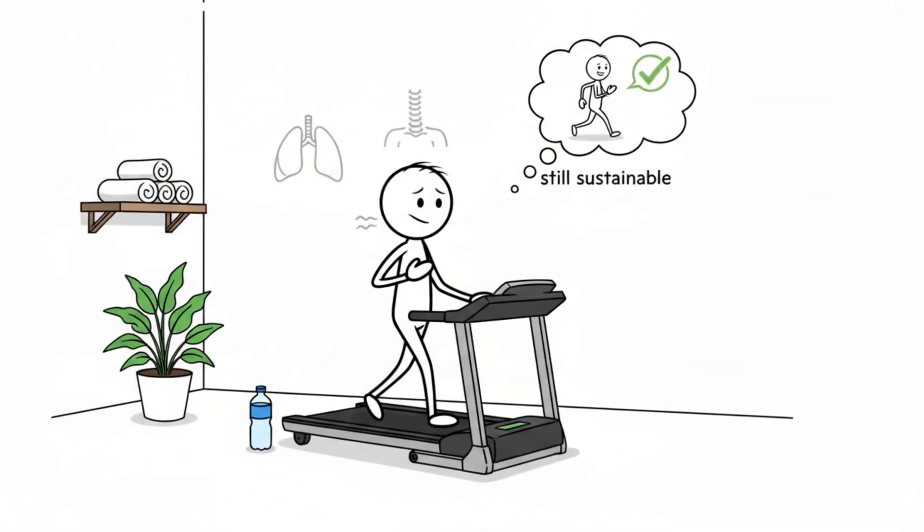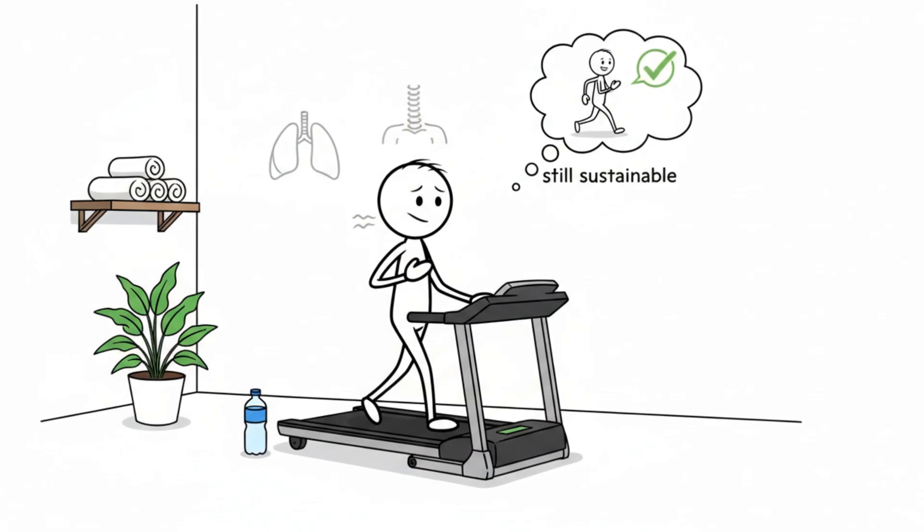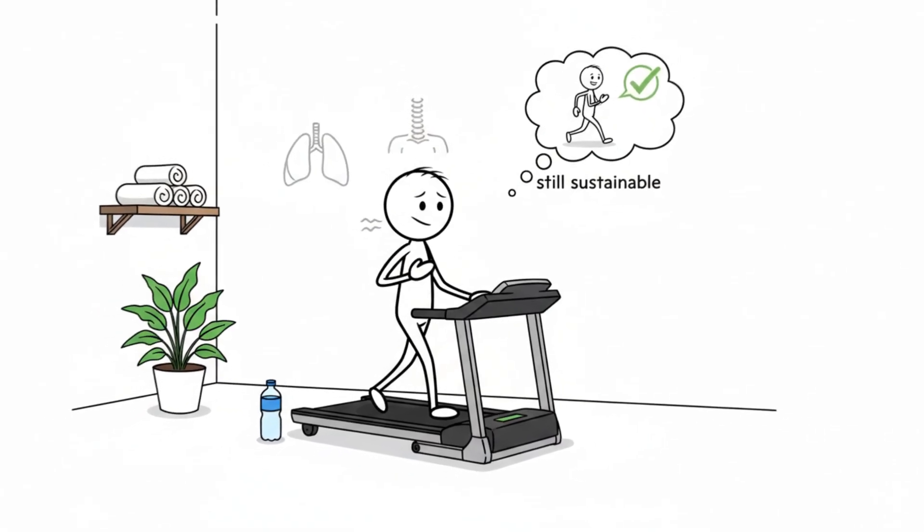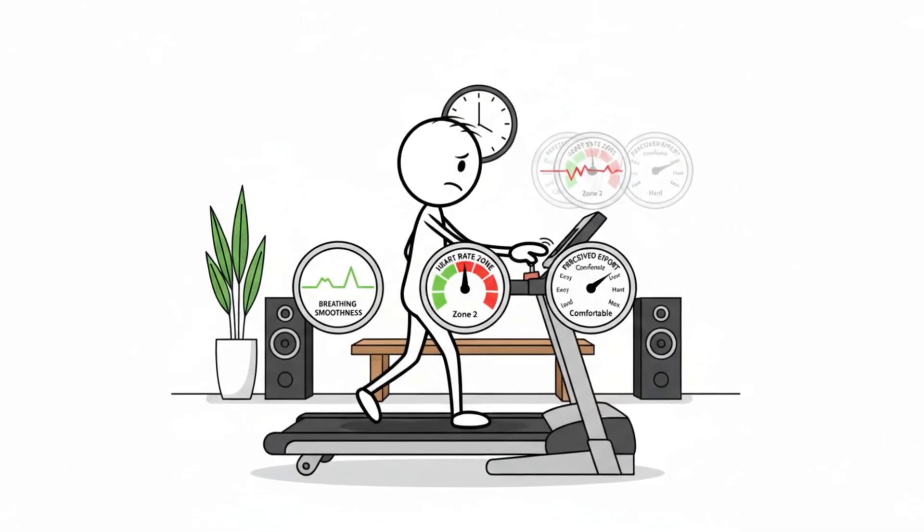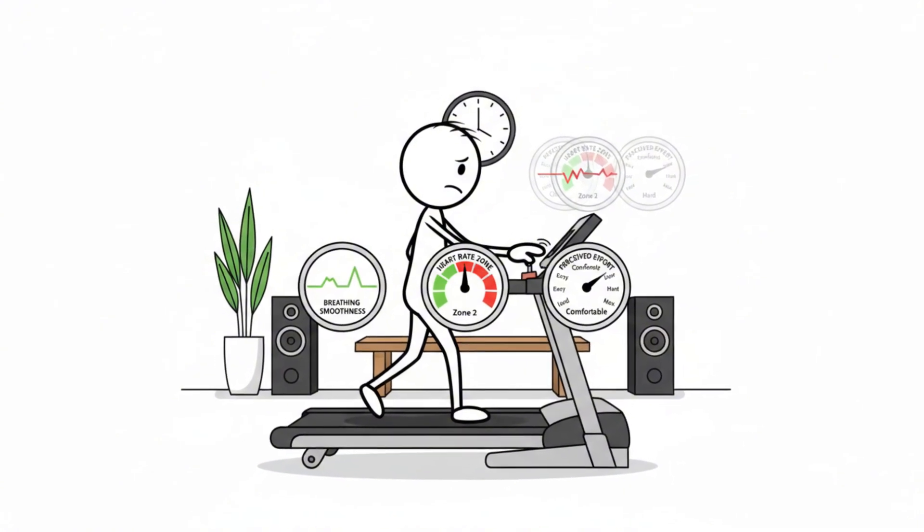Check your breathing every few minutes, feel your posture, and ask yourself whether the effort still feels sustainable. If you notice creeping intensity, just adjust. Zone 2 is forgiving, as long as you stay honest with the signals your body gives you.